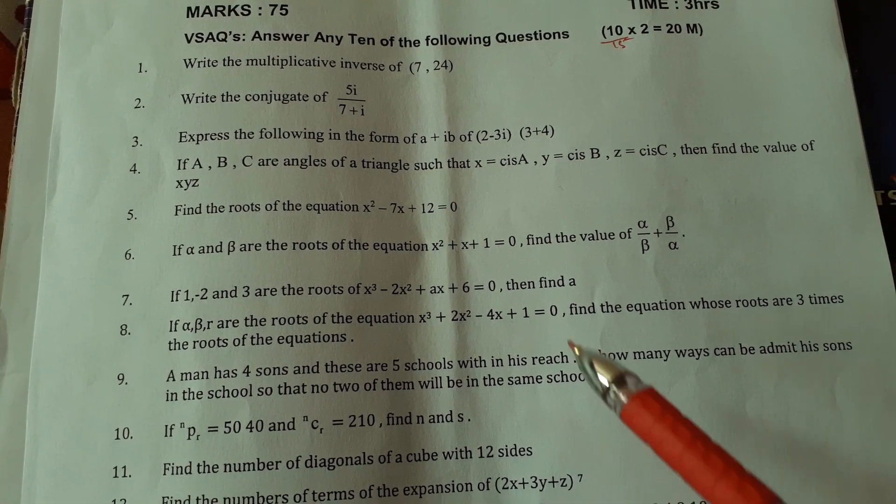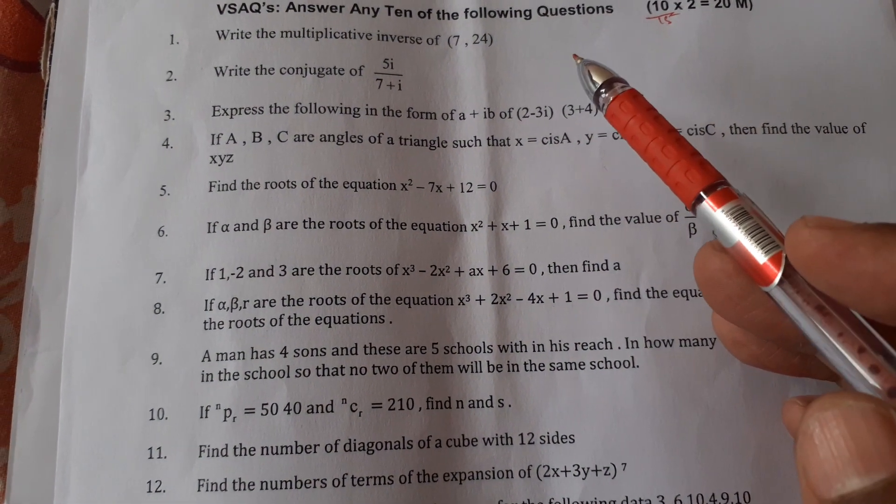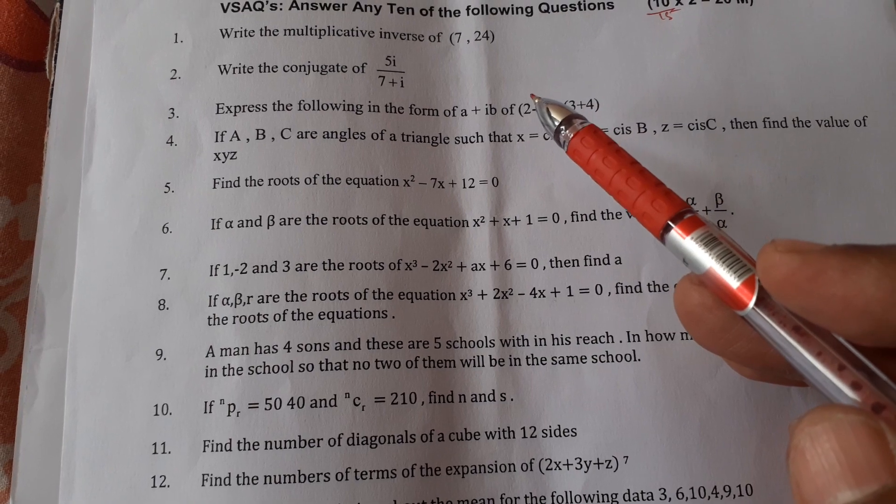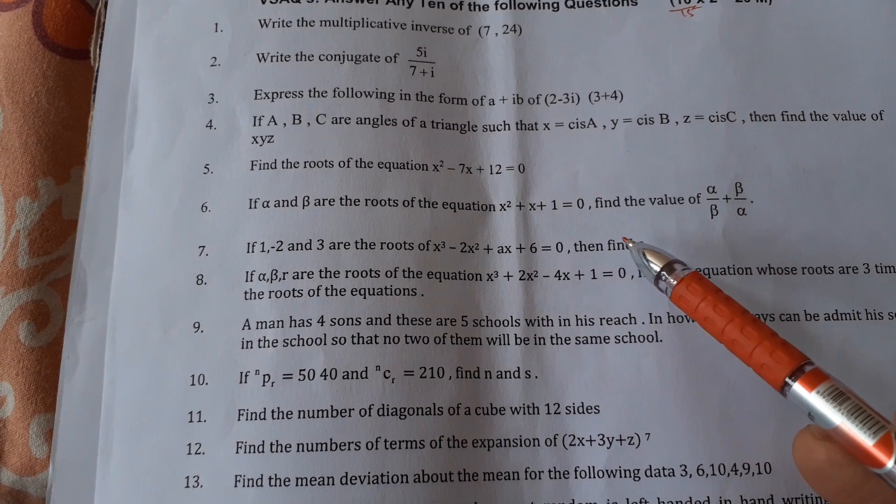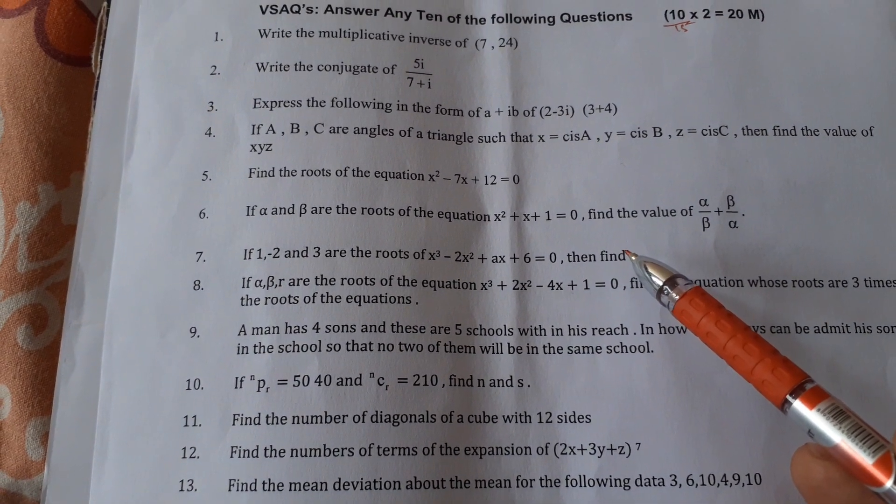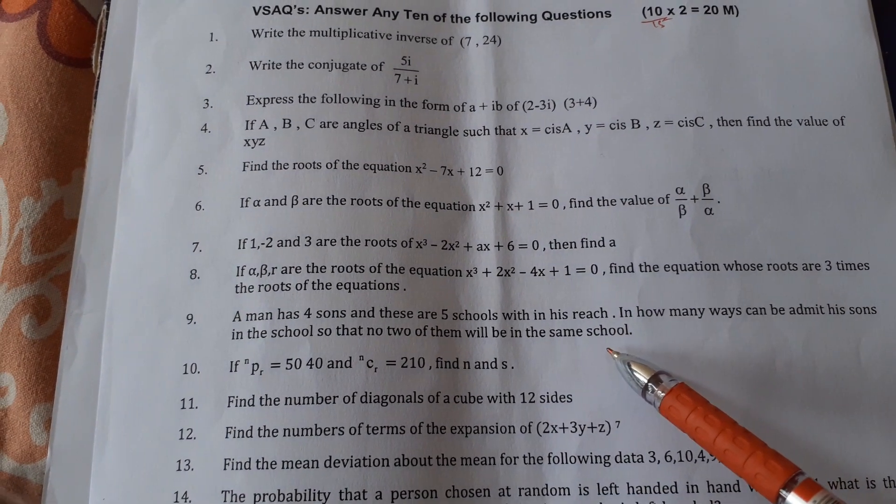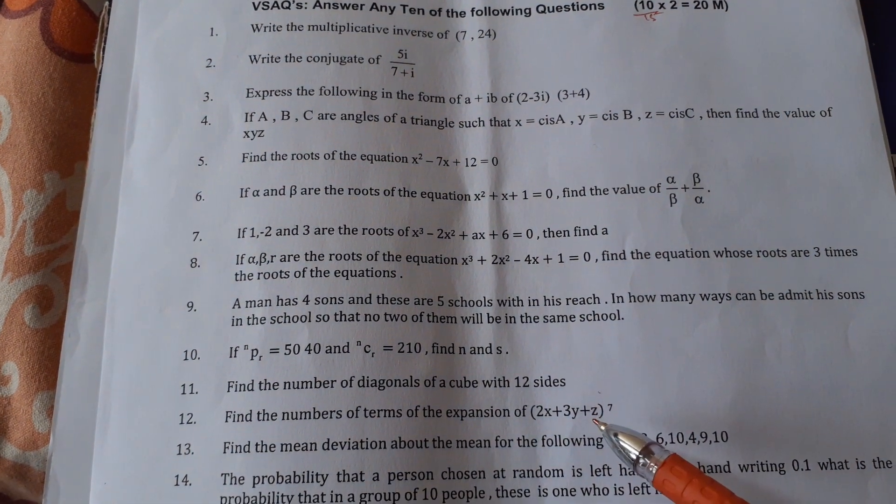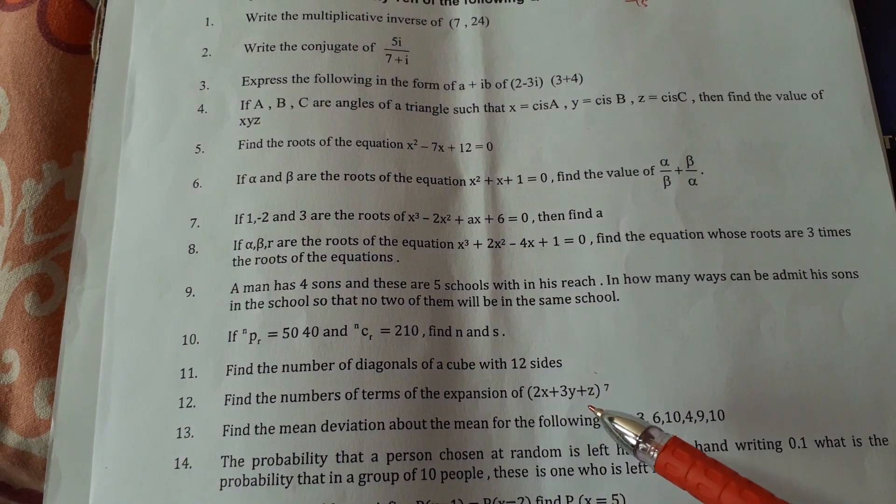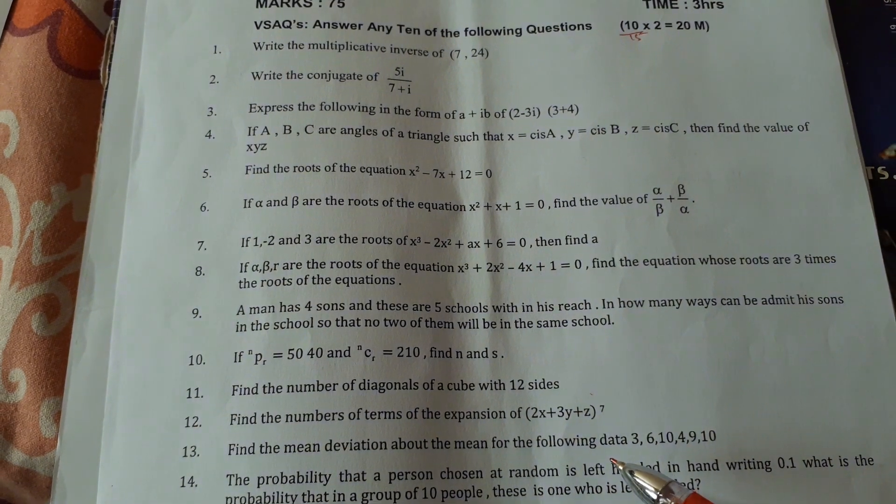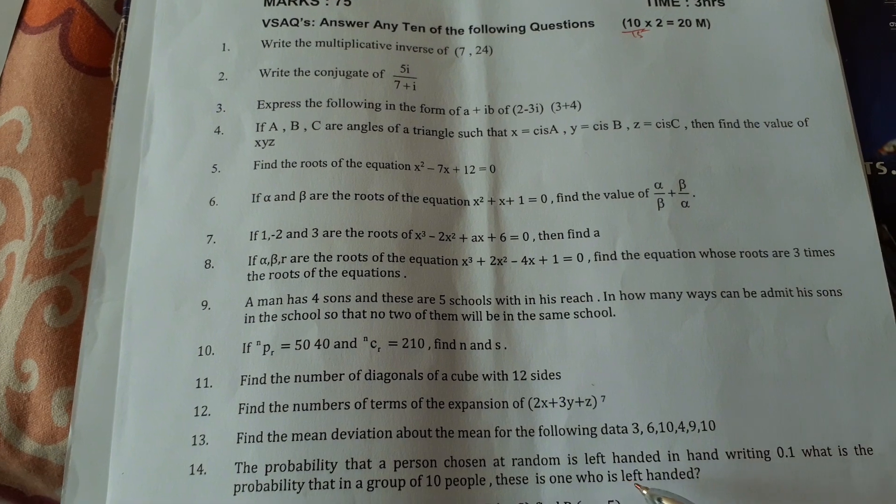How many VSAQs are given? 15 VSAQs are given. Out of 15, only 10 we have to answer. So please go through the VSAQs. These are the VSAQs for Math 2A paper. Very good choice is there, we can avoid plenty of choice. Out of 15, only 10 questions we have to answer. Each one carries 2 marks, so 20 marks for VSAQs.